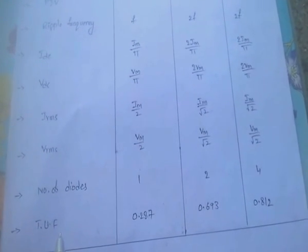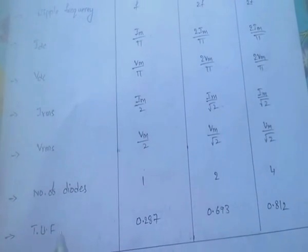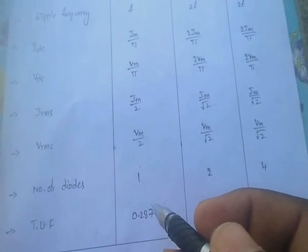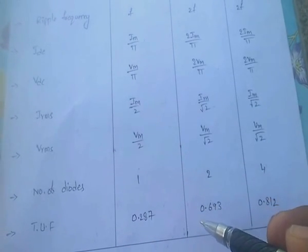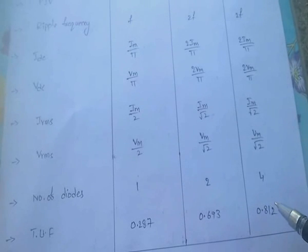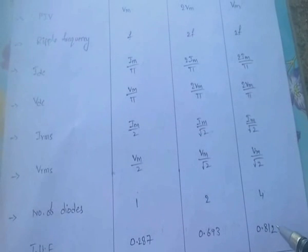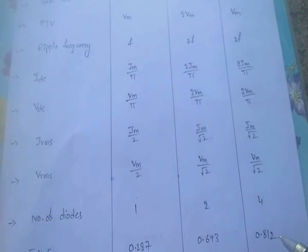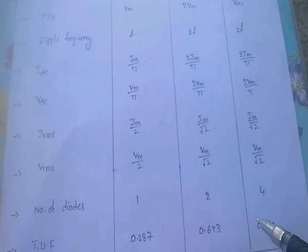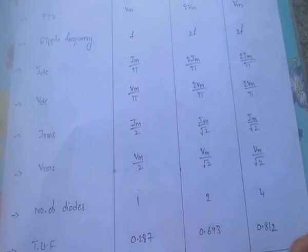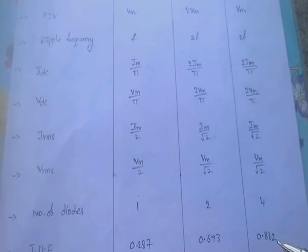The transformer utilization factor (TUF): for half wave rectifier it is 0.287; for full wave rectifier with center tap it is 0.693; for full wave rectifier with bridge type configuration it is 0.812. The TUF is highest for the full wave rectifier with bridge configuration.